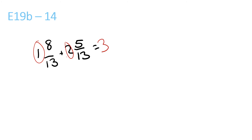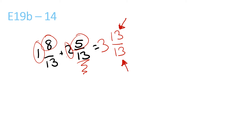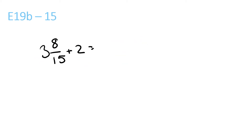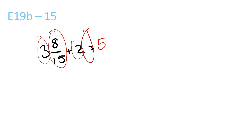1 plus 2 is 3. 8 plus 5 is 13 over 13, because the bottom one always stays the same. Since the top and the bottom are both the same, it equals 1. So you bring the 3 down over here to show your working — 3 plus 1 is equal to 4. 3 plus 2 is 5. There's no fraction to plus this with, so you just bring this all the way over here. And 5 and 8 over 15 is your answer.